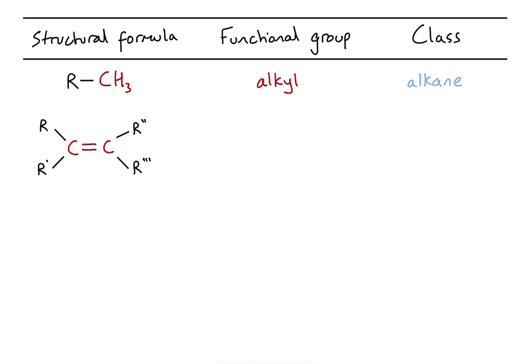Here we can see a carbon-carbon double bond. The R groups — with the little dashes after them — just indicate that they could be different to each other, or exactly the same; they could all be hydrogens or slightly more complicated sections of the molecule. If I see a double bond, that is known as the alkenyl functional group, and it would belong to the class of the alkenes.